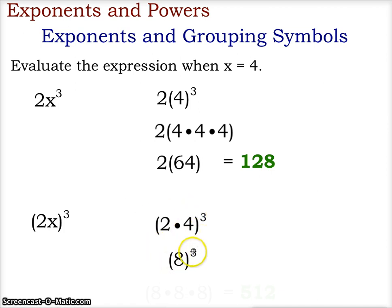A value of 8 cubed, 2 times 4 being 8. And in this situation, we get 8 times 8 times 8, which we get 512.